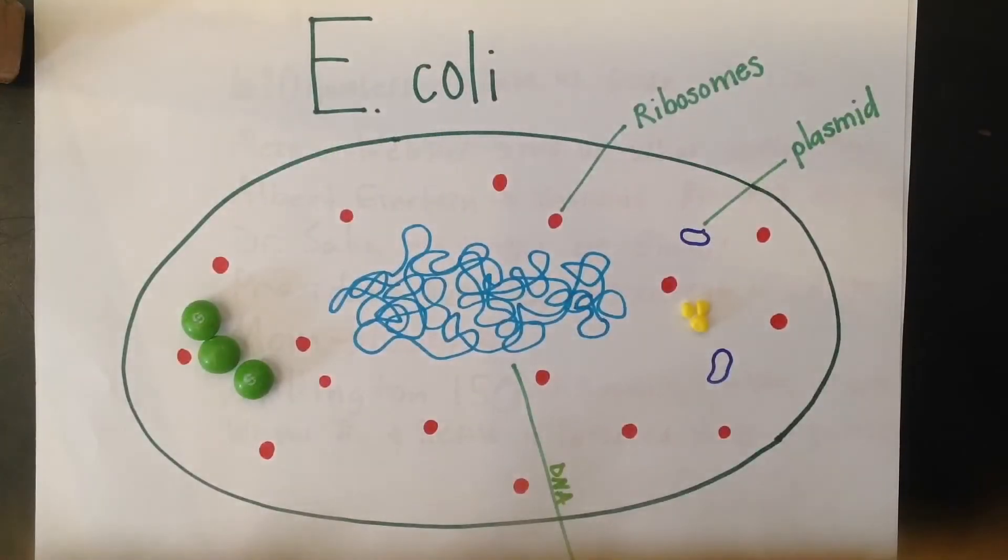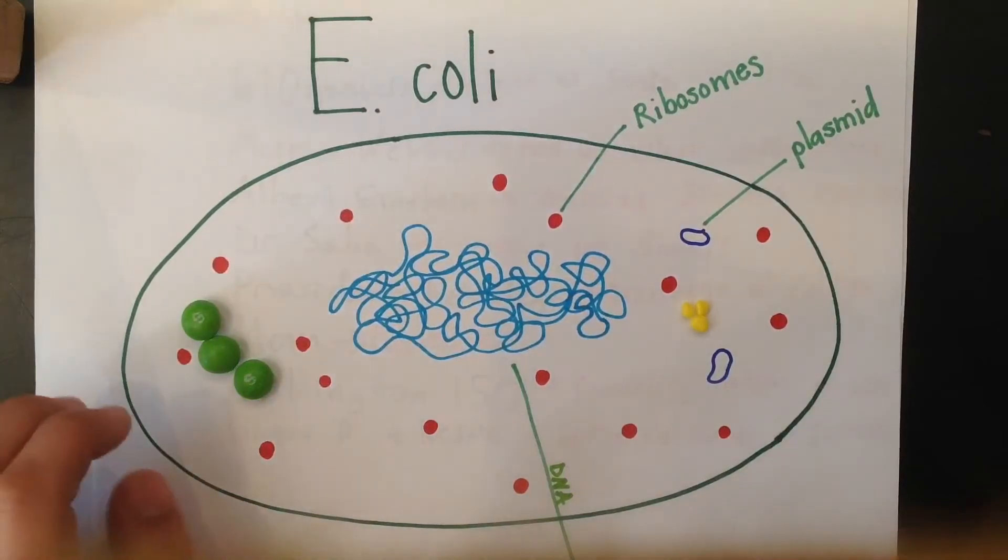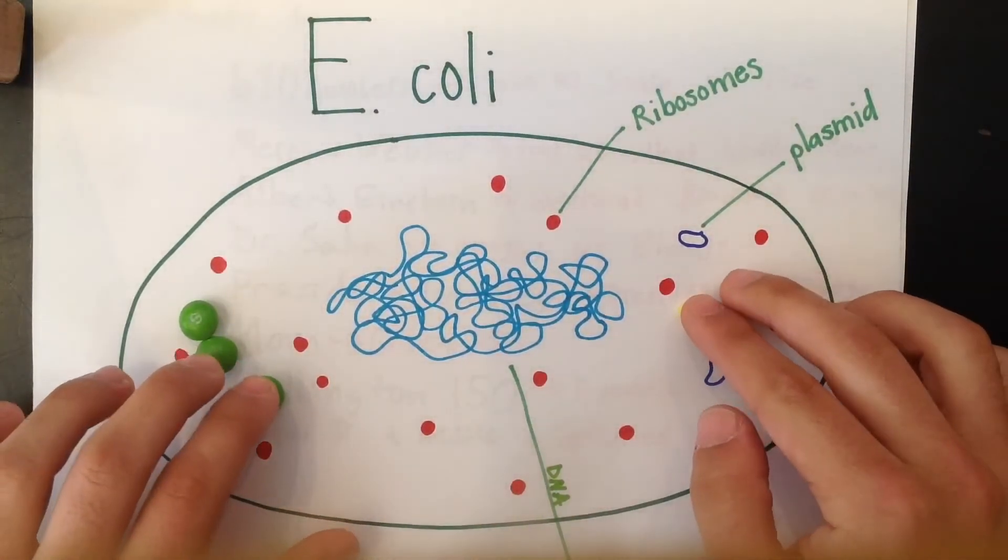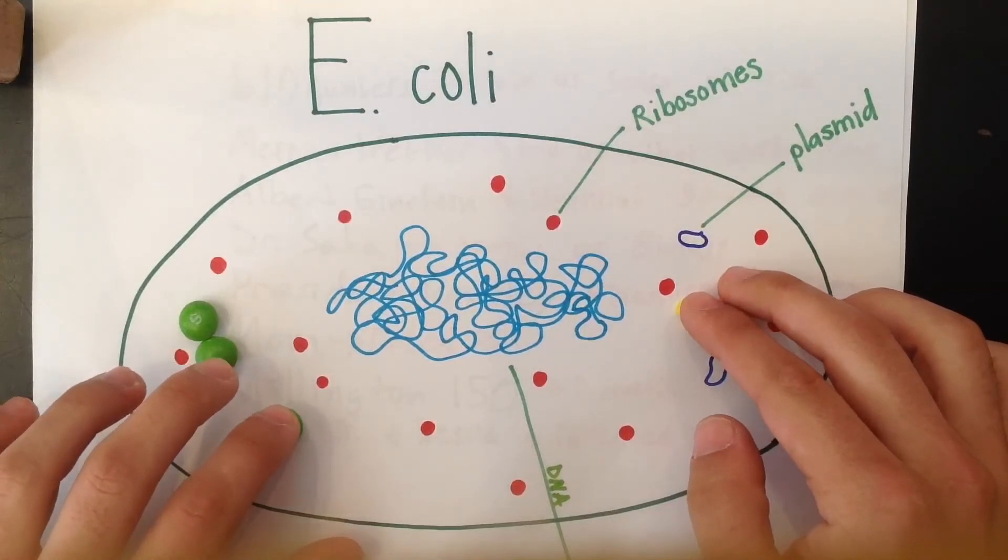Now tying in Brownian motion and the presence of ribosomes, plasmids, and DNA in the E. coli cell, you can see how the interactions between enzymes and substrates would be impeded by the presence of all these extra molecules.